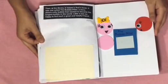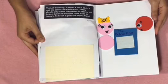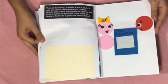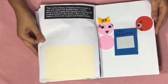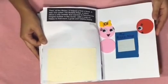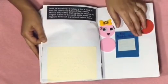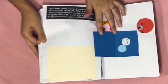Then, at the library, B helped A find a book. It was one called The Bubble Pillar, a story about a silly bubble that wanted to become the longest bubble in the world. Little A was so happy to find such a great and helpful friend. Little A and Little B are holding the Bubble Pillar book that opens up to show the Bubble Pillar.